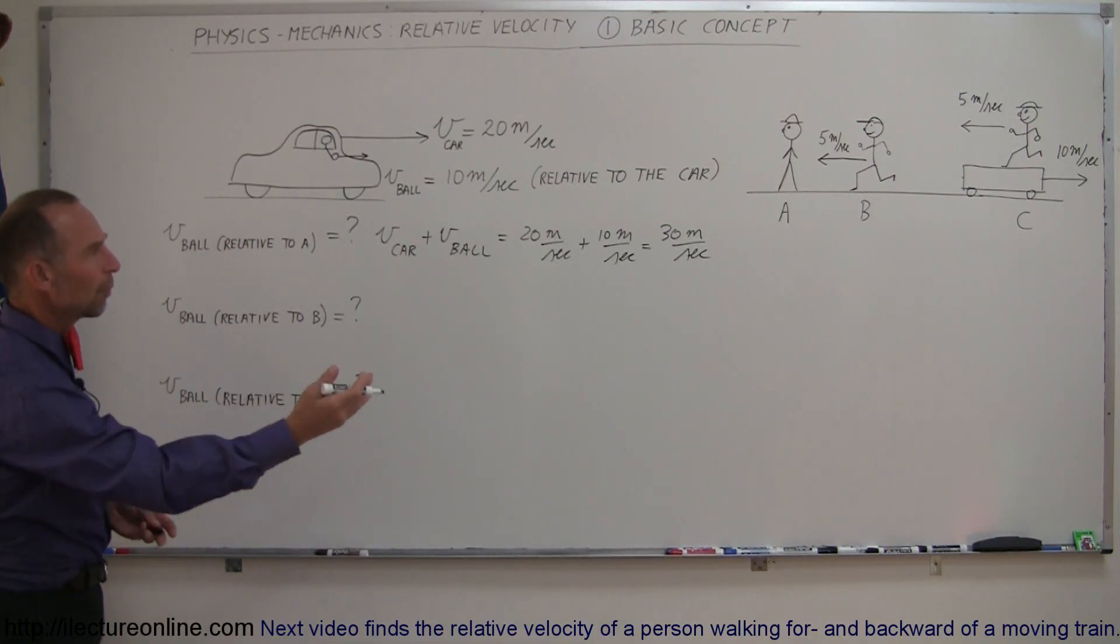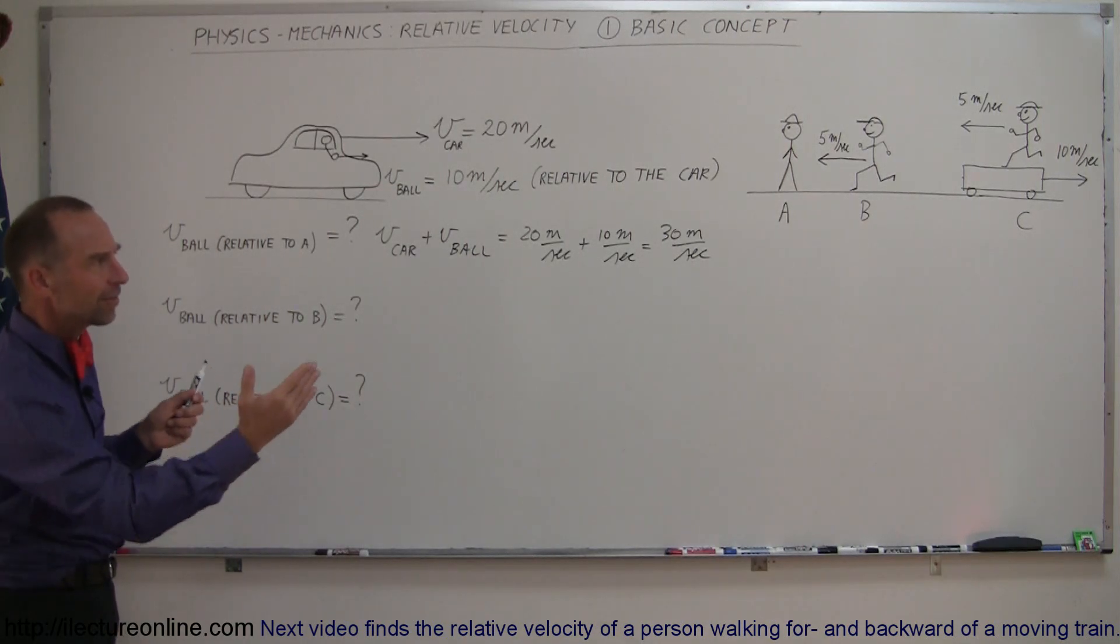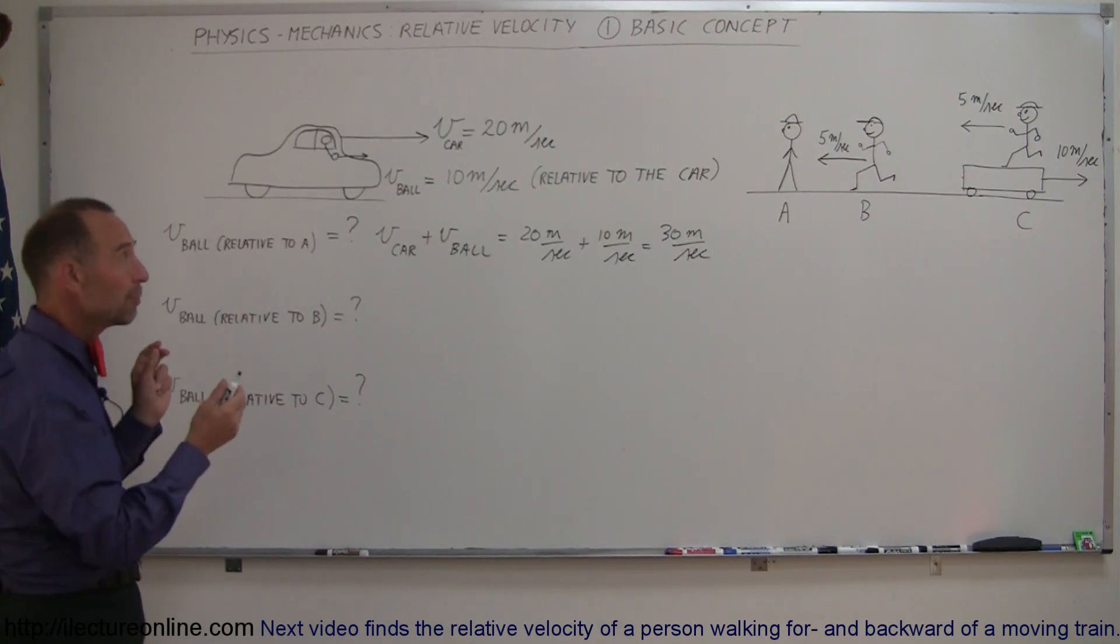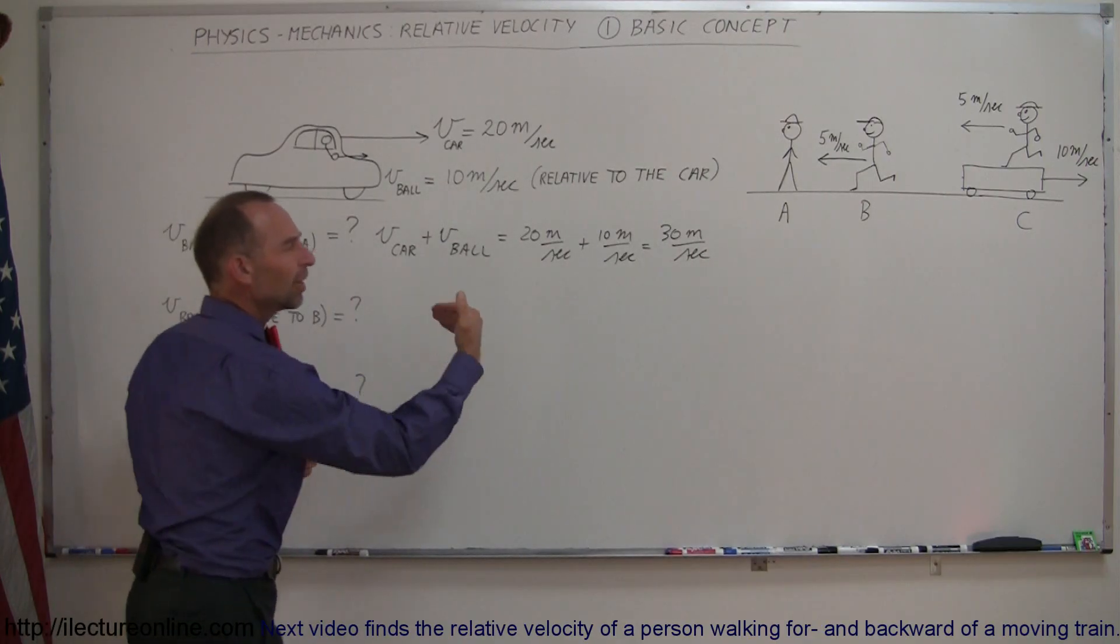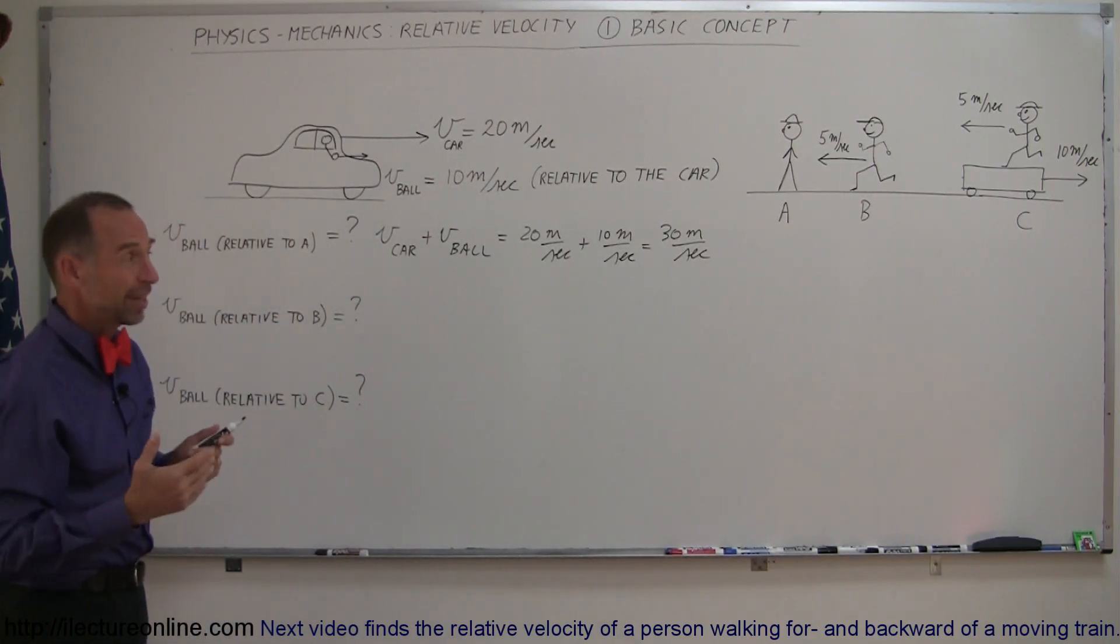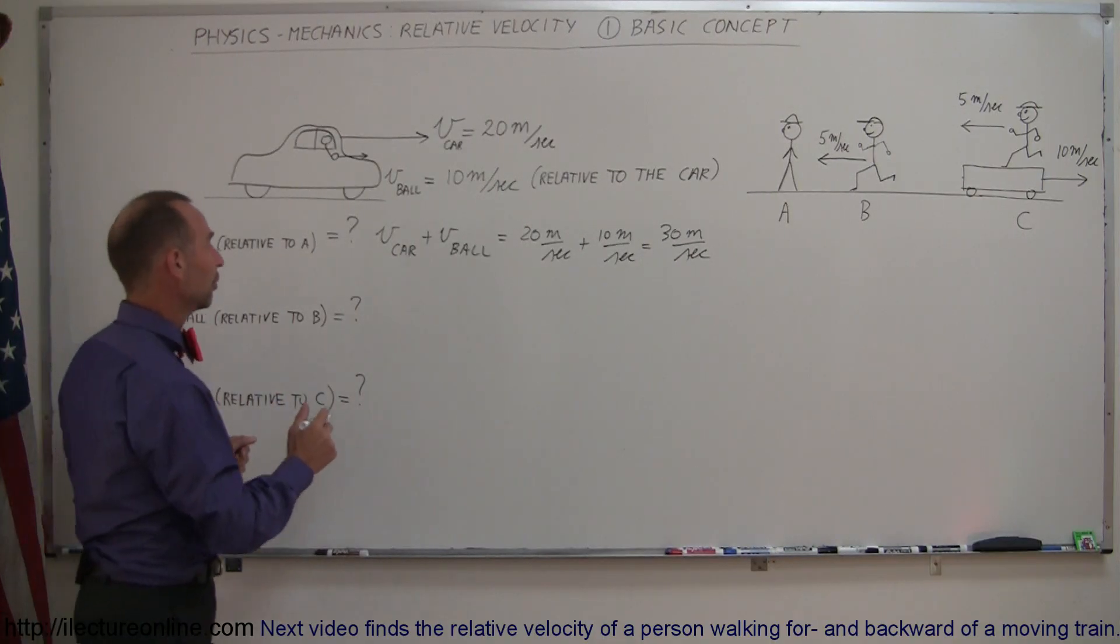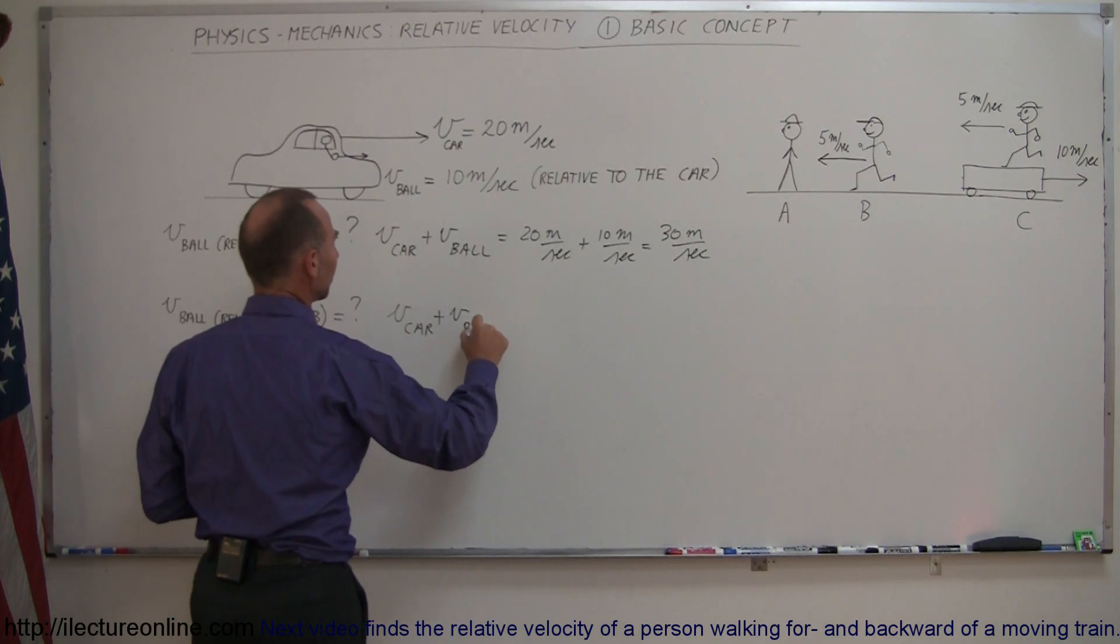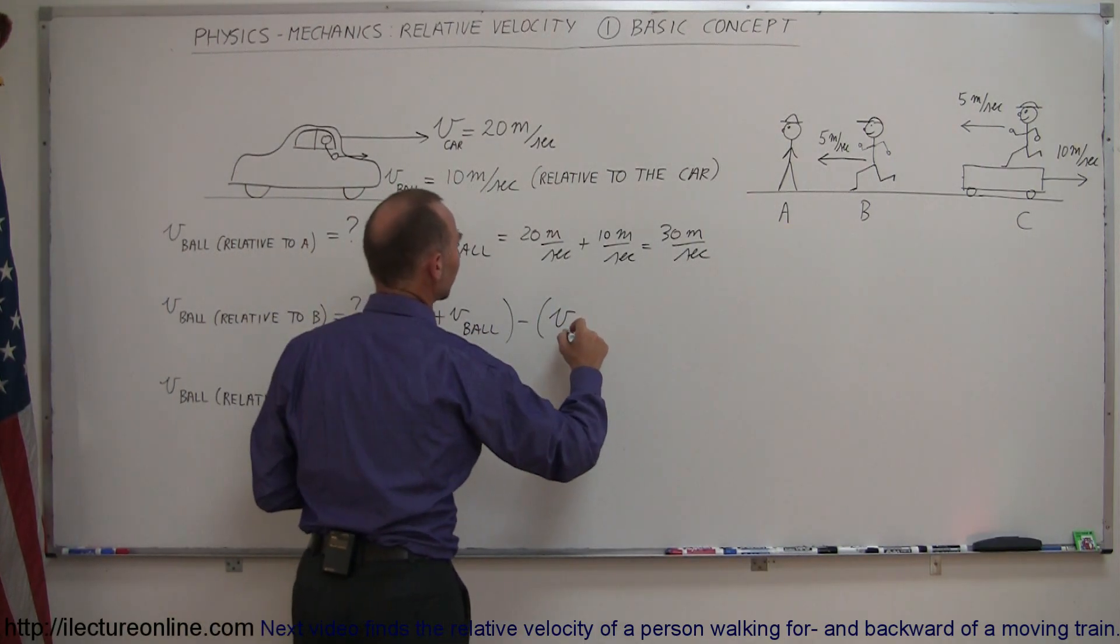What about Observer B who's now running towards the ball? Now intuitively we can look at it and say that means that B is approaching the ball faster than A, so the ball should appear to be moving to B faster than to A. But B is moving to the left at 5 meters per second, and that means it's a minus 5 meters per second. So the best way to describe it in the form of a formula is to write that the velocity of the ball is going to be equal to V of the car plus V of the ball and then minus V of Observer B.